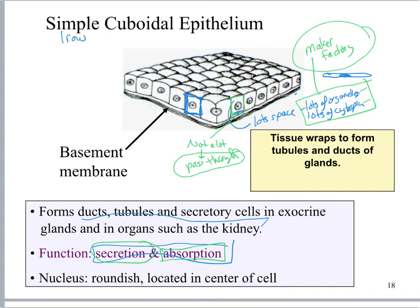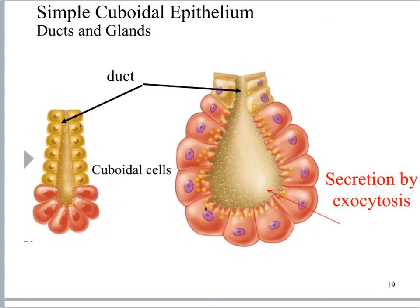Here we have two different types of glands with simple cuboidal epithelium — you see one row, and the cells are roughly cuboidal in shape. These cells have all this room inside for making stuff that is then going to be secreted into the lumen of the tube.